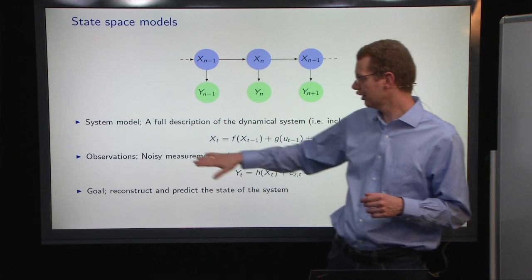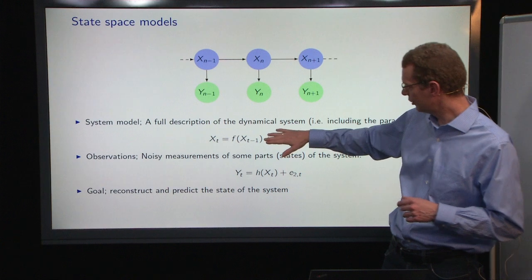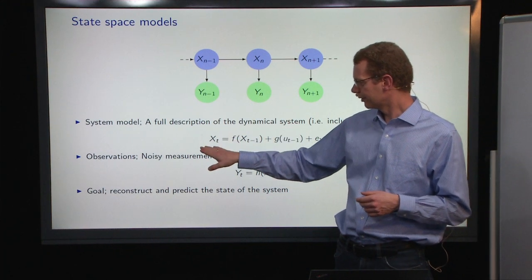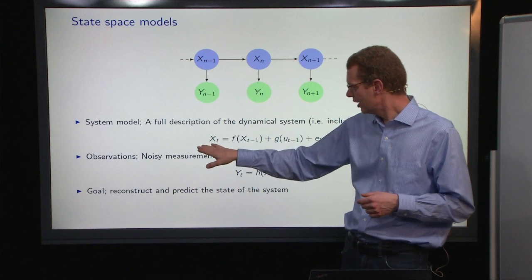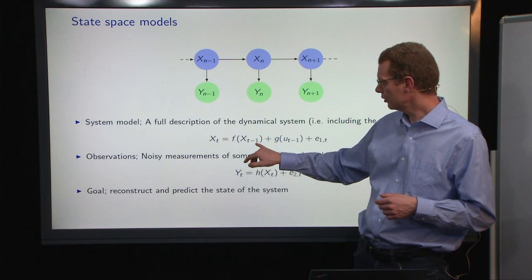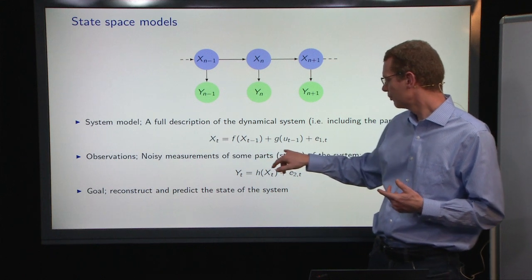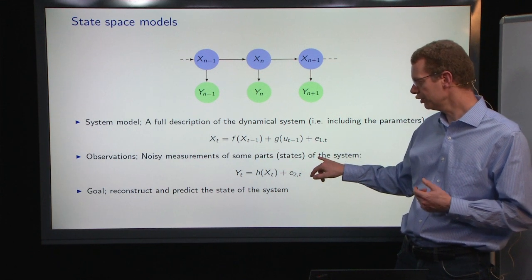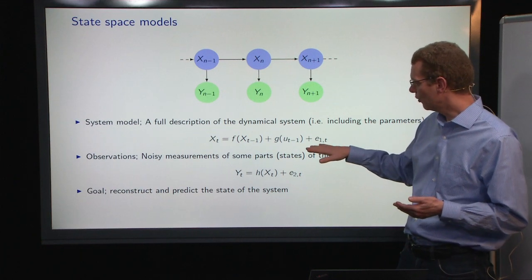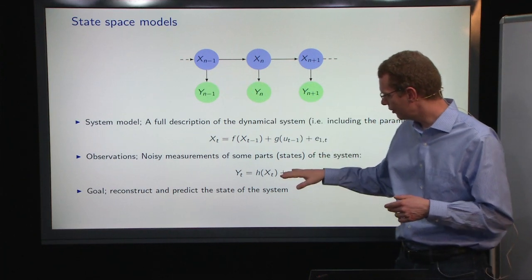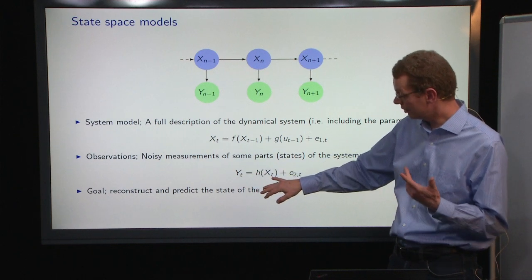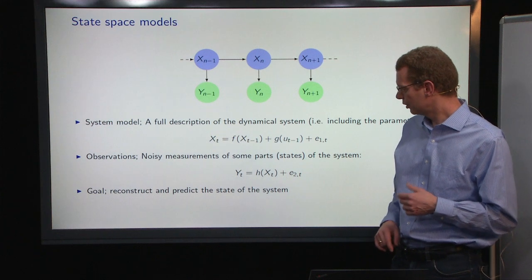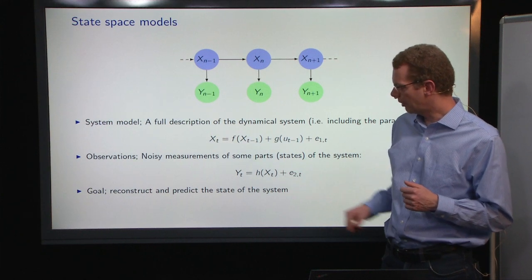In general, we have a full description of the dynamical system, say the heat dynamics of a house, where the state at time t, x_t, depends on a function of the previous state plus a function of an input plus potentially some noise. The observation equation indicated by this arrow here is then a potentially nonlinear function of the input given as the output y_t plus some observation noise.